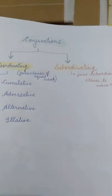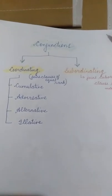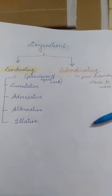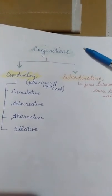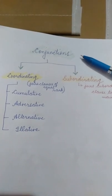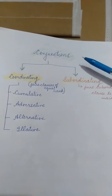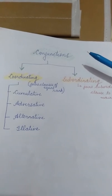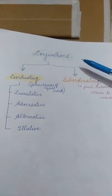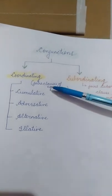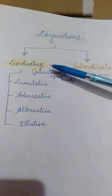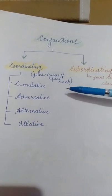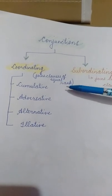Good morning children. Our next chapter is about conjunctions, which is also one of the parts of speech. Conjunctions are words which join two different sentences, or sometimes words. Conjunctions are divided into two classes: coordinating conjunctions and subordinating conjunctions. Coordinating conjunctions join clauses of equal rank — equal rank means independent clauses that are not dependent on each other.